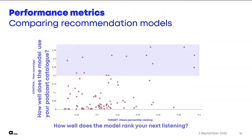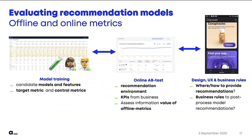This sounds quite dry, but of course it helps with choosing. There is much more to evaluating recommendation models. What I just mentioned regards model training that happens offline — the data science work of finding candidate models, features, and measuring target and control metrics across different parameters and models.